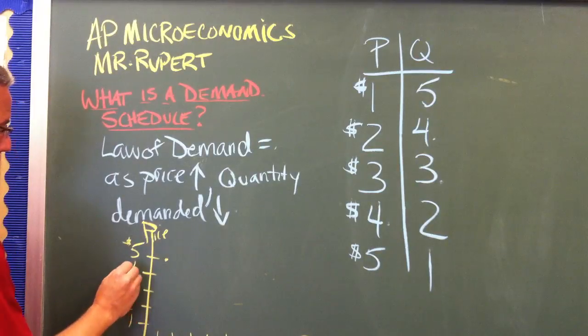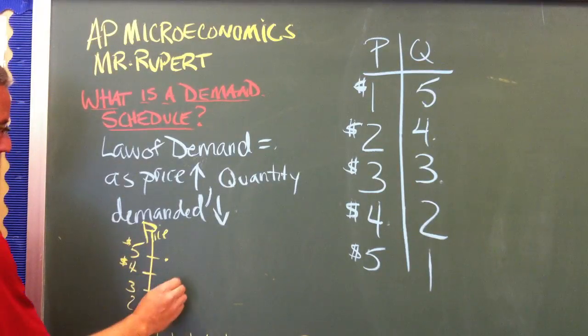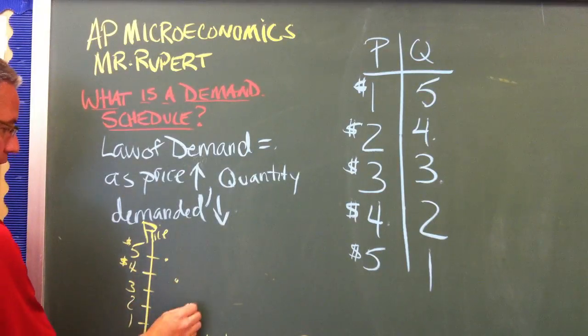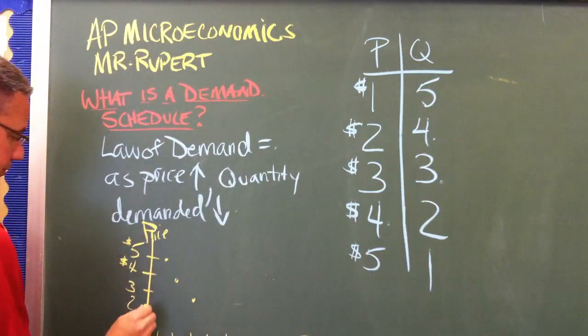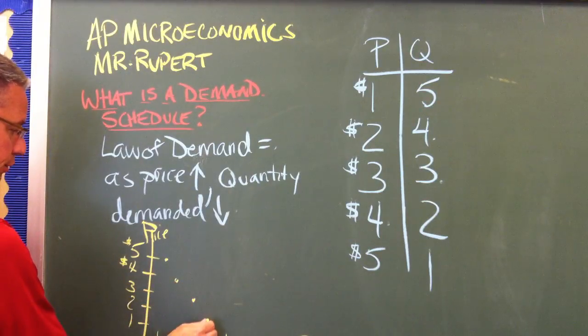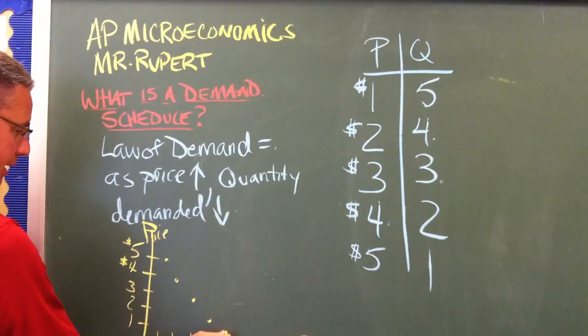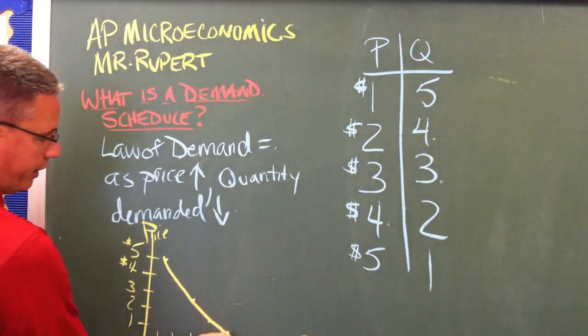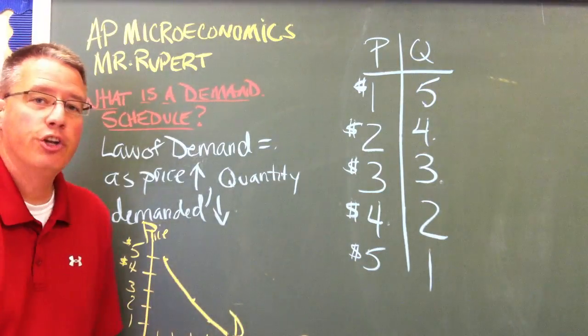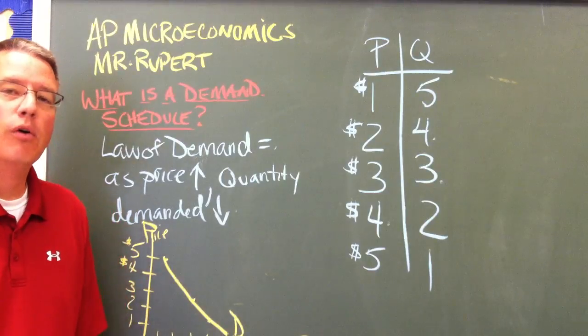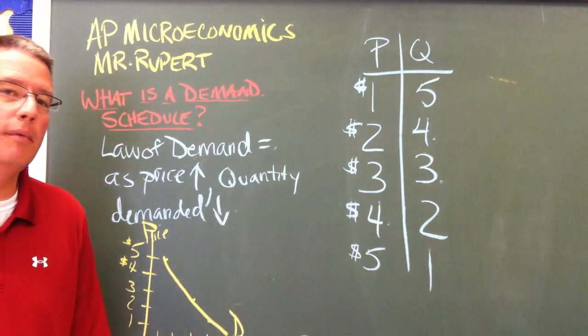If the price drops to $4, I'm going to want two cups of coffee, three and three, two and four, and one and five. So here is my demand curve for my desire for Starbucks coffee.